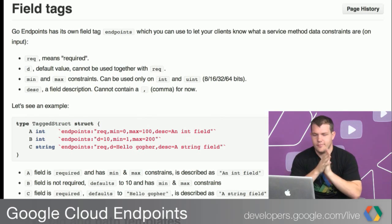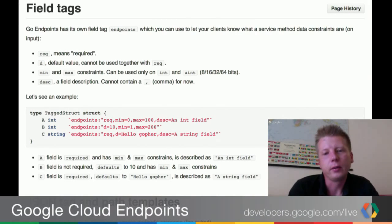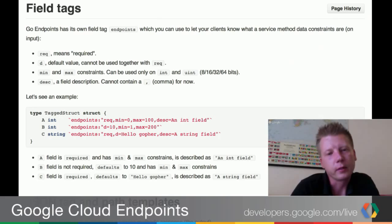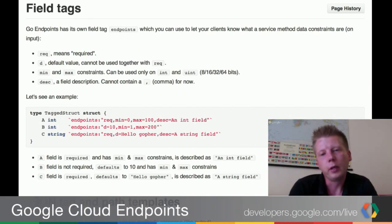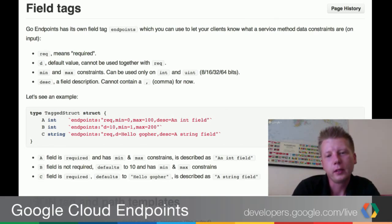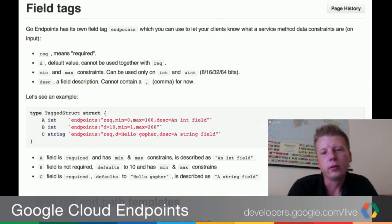Since this is open source, everybody can go to GitHub and see how it's done. Besides types, there are also things like making fields required or defining a default value. We created a new tag called 'endpoints' — similar to the JSON tag where you specify field name and type — where you can specify all sorts of things related to the discovery document. Currently there are five options, but more will likely be added in the future.